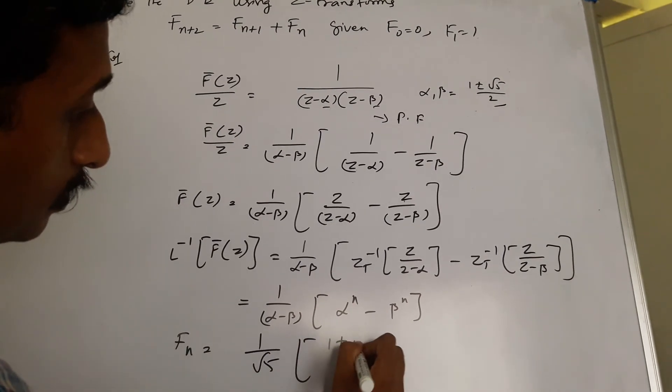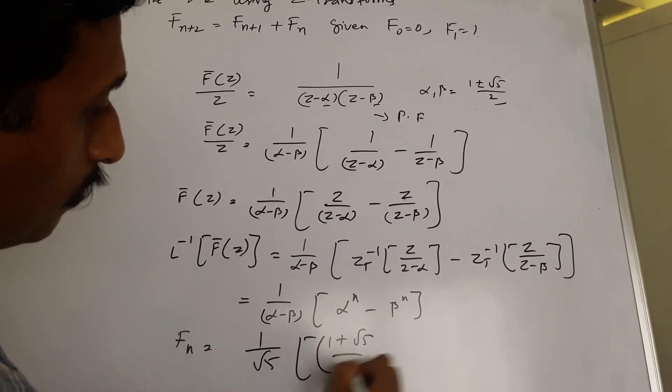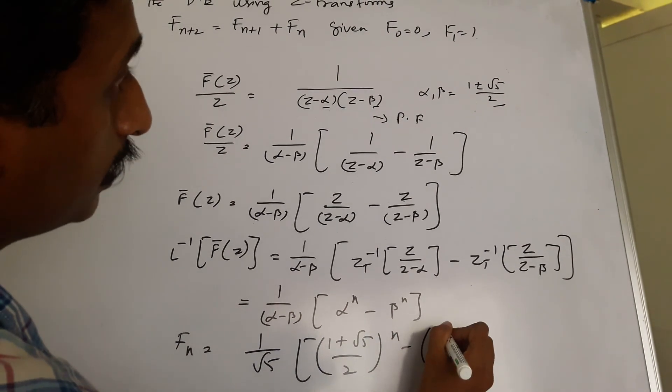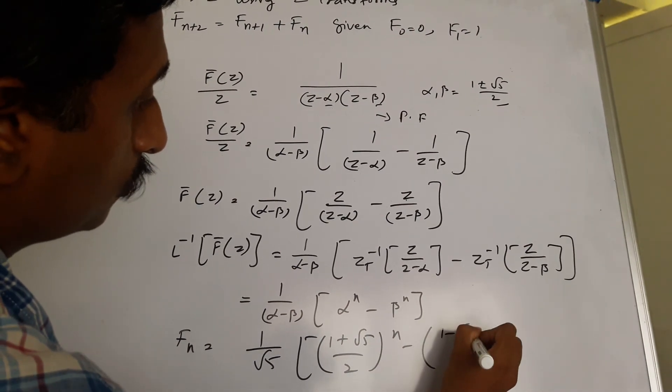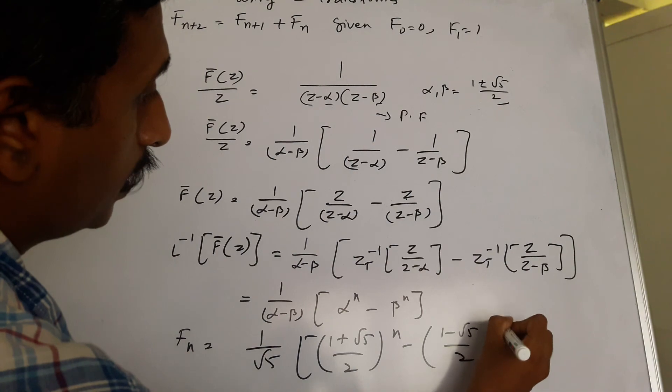f_n = 1/√5 [(1 + √5)/2]^n - [(1 - √5)/2]^n.